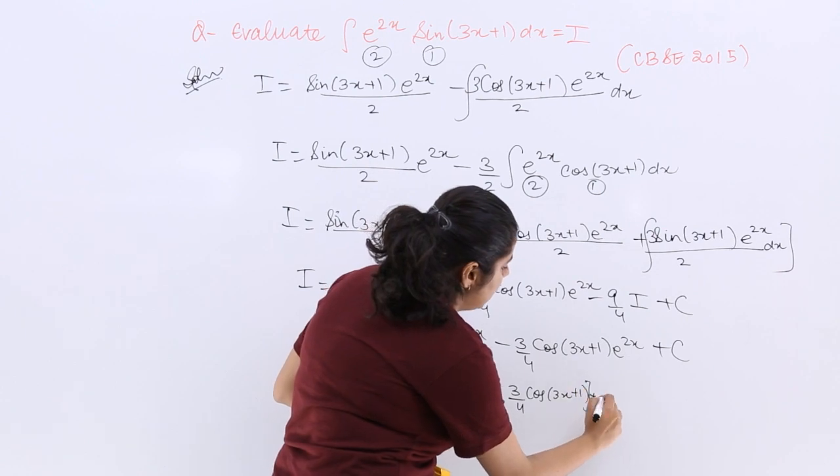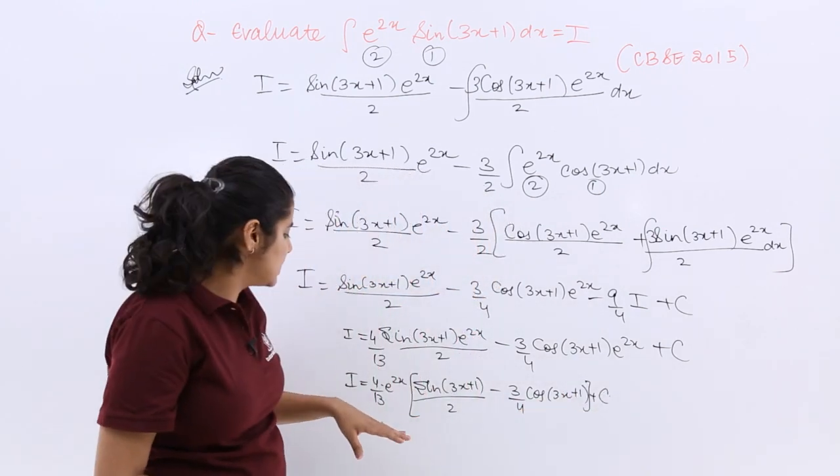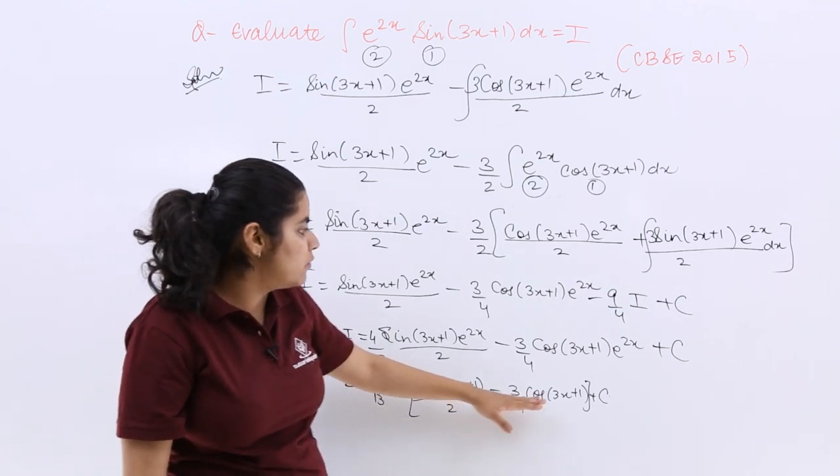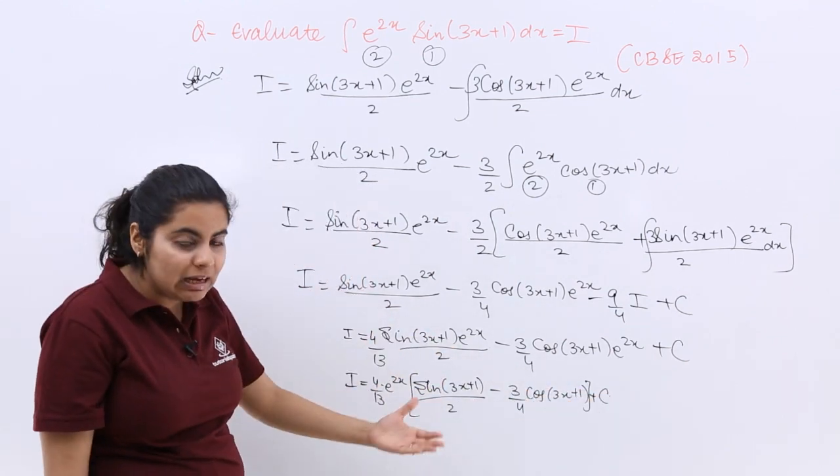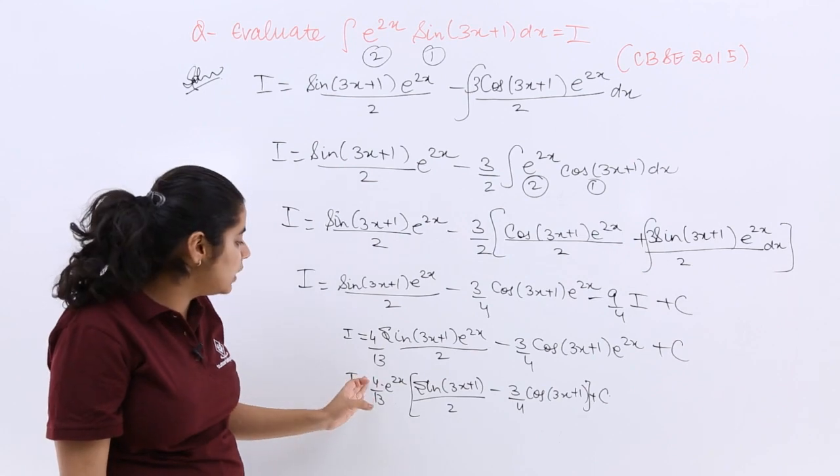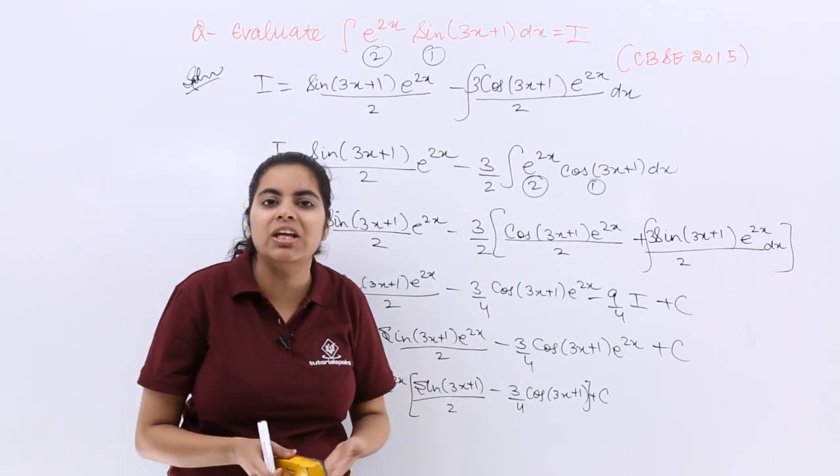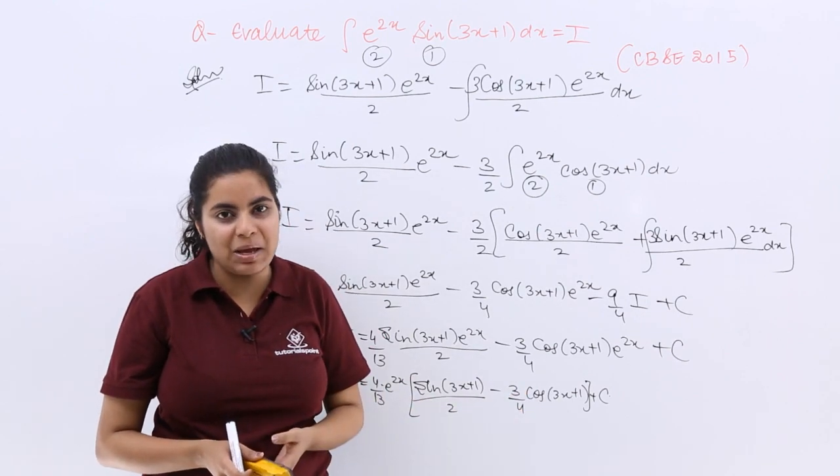Let me check with the answer. I know that 4 by 13 is already here, so rest everything would be same. Another step you can follow is you can introduce 4 inside and cancel whatever cancels, but that doesn't change. The final answer is the last step shown.